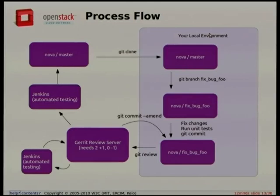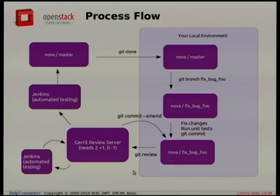The process for a developer is pretty simple but specific: clone a repository, make changes in your local environment, commit those changes, and push to our code review system called Gerrit using a tool we wrote called git review — just one command. Once it shows up in Gerrit, Jenkins starts running tests. Reviewers come along, review your change, and if they like it, they approve it for merging, it goes back to Jenkins, and if it passes tests it gets merged into the Git repository.